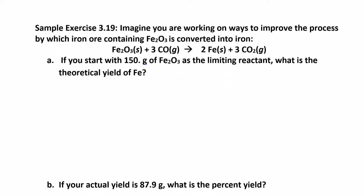Let's look at a problem using stoichiometry and then calculate the percent yield in part B. Here you have this reaction with iron 3 oxide — you have 150 grams of that, and they tell you that's your limiting reactant, so we don't have to figure out what it is. Now they want to know what's the theoretical yield of iron. Basically this is a gram-to-gram conversion where you take grams of Fe₂O₃ and figure out how many grams of iron you'd get.